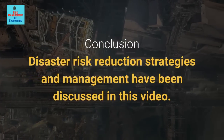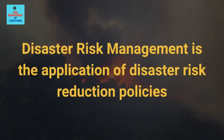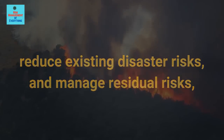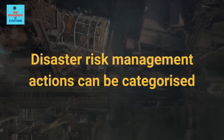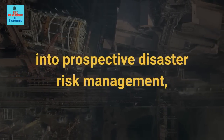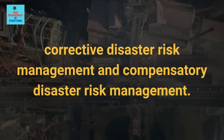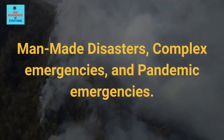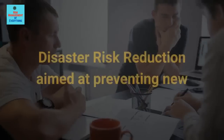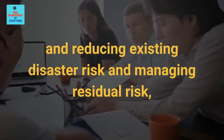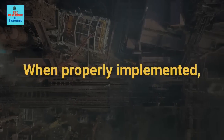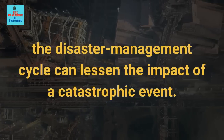Conclusion. Disaster risk reduction strategies and management have been discussed in this video. Disaster risk management is the application of disaster risk reduction policies and strategies to prevent new disaster risks, reduce existing disaster risks, and manage residual risks, contributing to the strengthening of resilience and reduction of losses. Disaster risk management actions can be categorized into prospective, corrective and compensatory disaster risk management. There are four main types of disaster: natural disasters, man-made disasters, complex emergencies, and pandemic emergencies. When properly implemented, the disaster management cycle can lessen the impact of a catastrophic event.